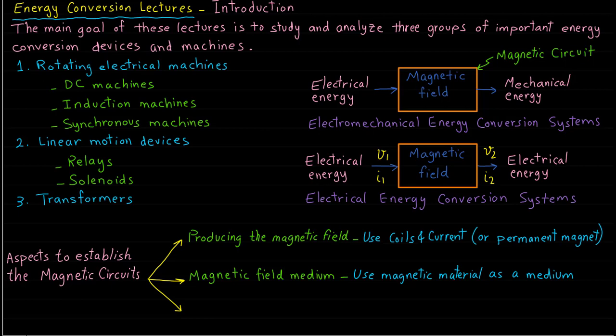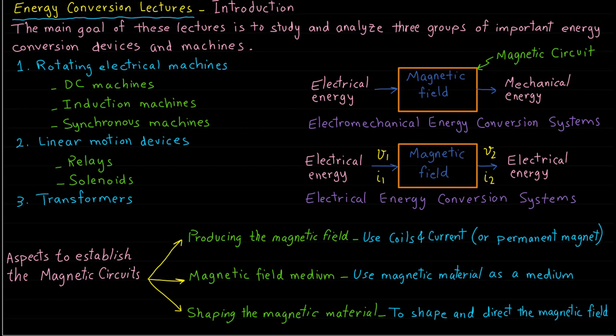Therefore, the size of the machine is reduced when magnetic material is used. The third aspect is shaping the magnetic material. In all the energy conversion machines and devices, the magnetic materials are structured in a certain way to shape and direct the magnetic field to obtain high magnetic field density where desired. Now let's see how these three aspects are applied to different energy conversion machines and devices.